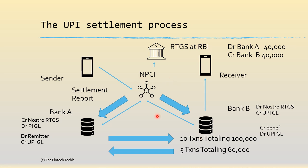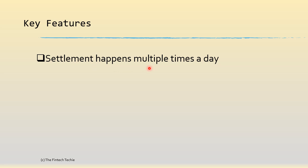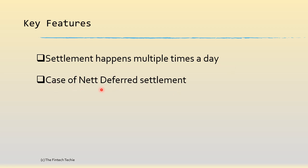Key features: Number one — the settlement happens multiple times a day, because due to huge volumes we cannot wait till end of day and banks have liquidity positions to maintain. This is the case of net deferred settlement. It is 'net' because settlement doesn't happen after each transaction like in RTGS, and 'deferred' because it happens post the beneficiary and remitter being debited and credited.